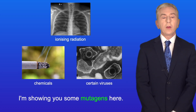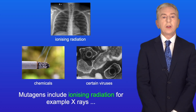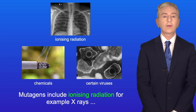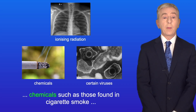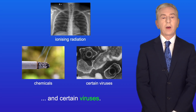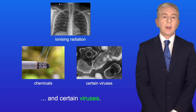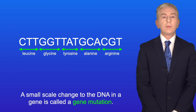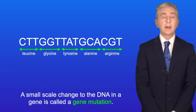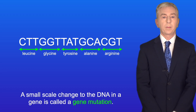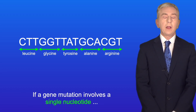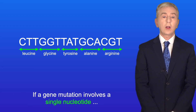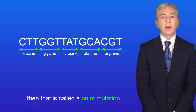Mutagens include ionizing radiation, for example X-rays, chemicals such as those found in cigarette smoke, and certain viruses. Now a small-scale change to the DNA in a gene is called a gene mutation, and if a gene mutation involves a single nucleotide, then that's called a point mutation.